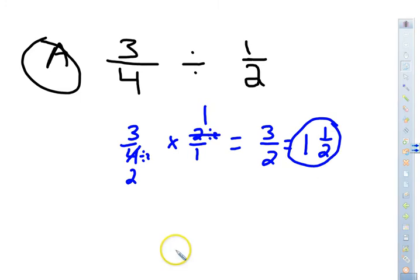OK. And again, how are we getting 1 and 1 half? Simply by dividing. It goes into it one time. Subtract. Your remainder is your numerator. What you divided by is your denominator.